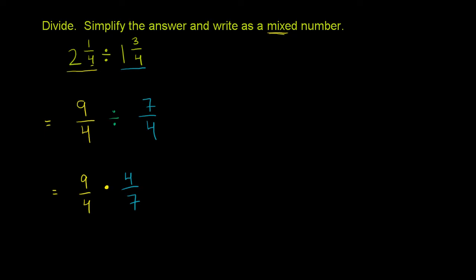Now, we could just multiply these. We could just say this is 9 times 4, which would be 36, over 4 times 7, which is 28, and then try to put it in lowest terms. Or we could do it right now, because it would be simpler. We have a 4 in the numerator, we have a 4 in the denominator. So let's divide our eventual numerators and our eventual denominators both by 4.